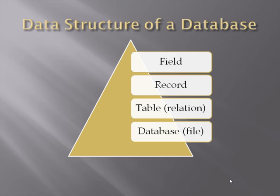We start at the top with a field, which is the smallest unit of useful information within a database. If we had a database of students, then a student's name or their home address would be a single field within this database.